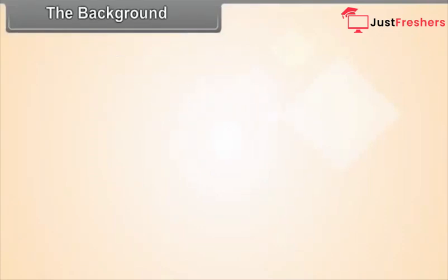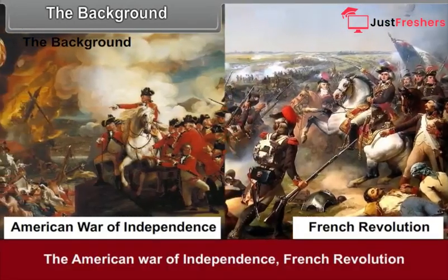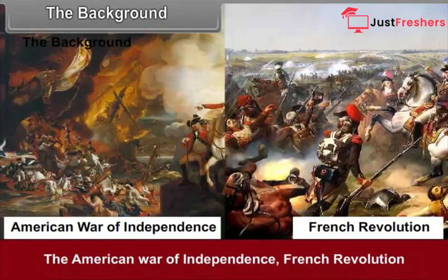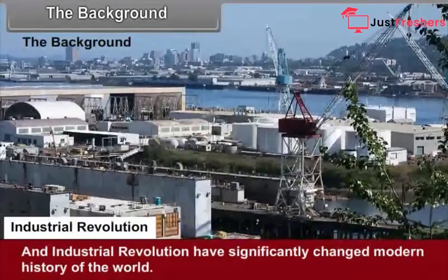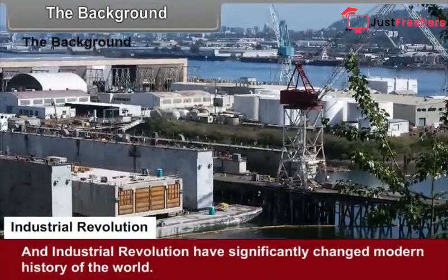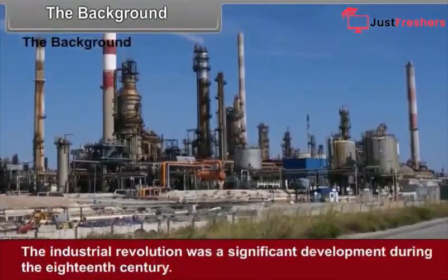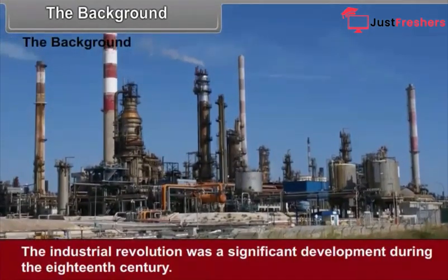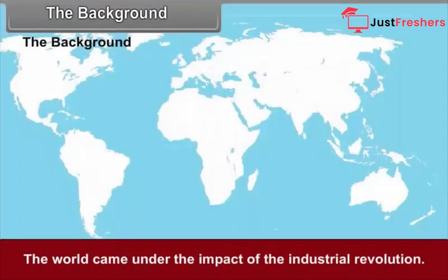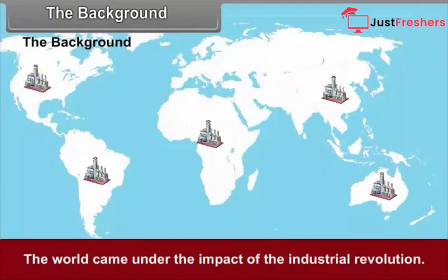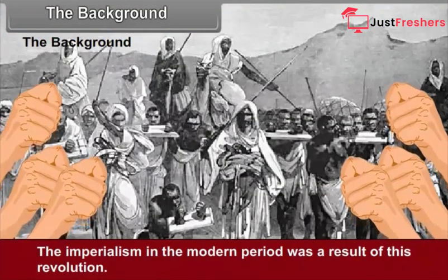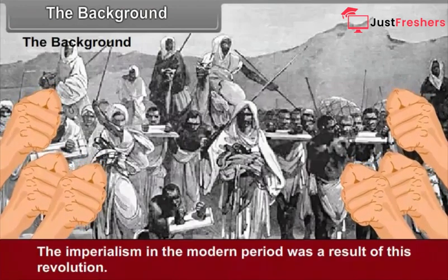Chapter 1: The Imperialism. Geographical Discoveries and Imperialism — The Background. The American War of Independence, French Revolution, and Industrial Revolution have significantly changed modern history of the world. The Industrial Revolution was a significant development during the 18th century. The world came under its impact, and the imperialism of the modern period was a result of this revolution.